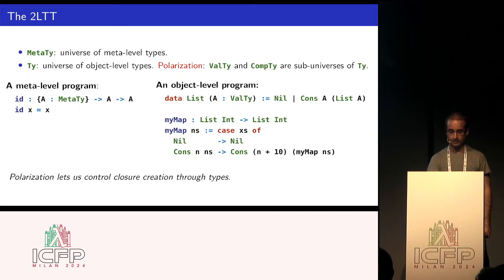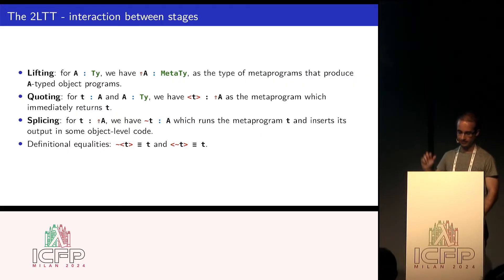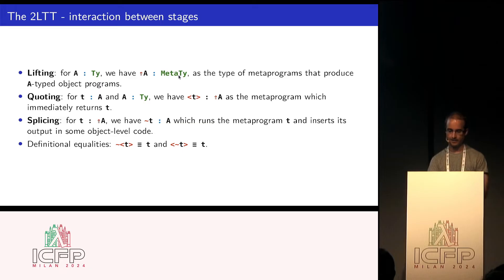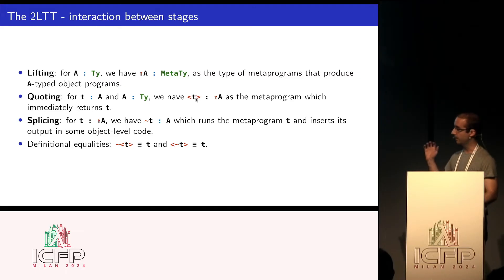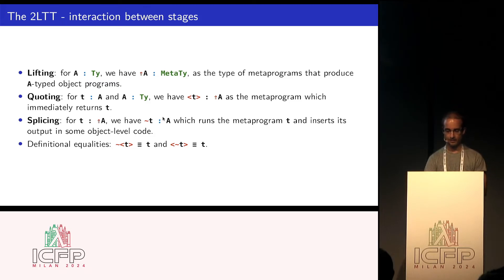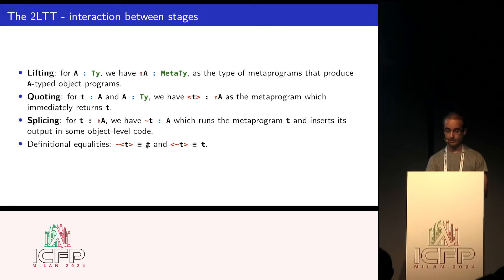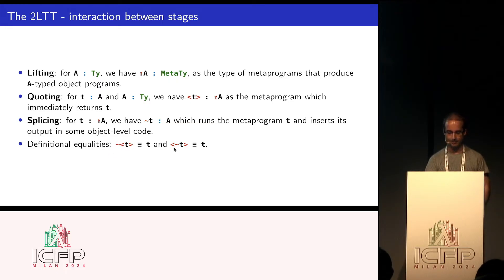How do we mix the meta and object levels together? The only way is to have three operations. One is lifting: whenever I have an object type A, I have Lift of A, which is the type of metaprograms that produce A-type object programs. We have quotation: whenever we have an object expression, we can put it in brackets as the quotation of T, which is the metaprogram that immediately returns this expression. And we also have splicing: whenever you have a metaprogram, you can splice it, which runs the metaprogram and inserts its output in some object-level code. These two operations are also definitional inverses, which is important for dependent type checking of this system.